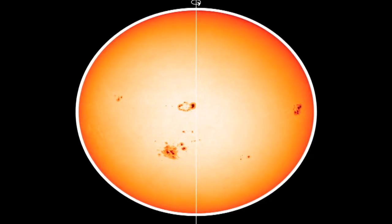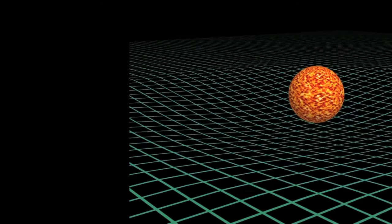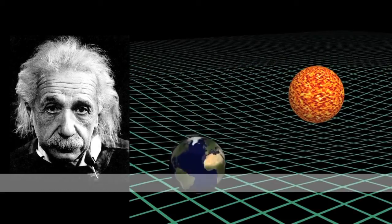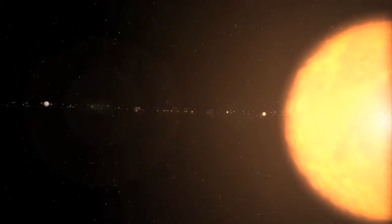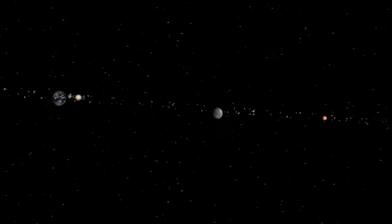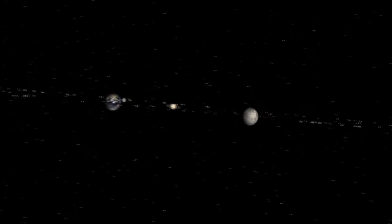The exact shape of the Sun also enables to carry out one of the tests of Albert Einstein's general relativity. Indeed, the exact distribution of the solar mass determines how the Sun affects the orbit of all the planets, and particularly that of Mercury.